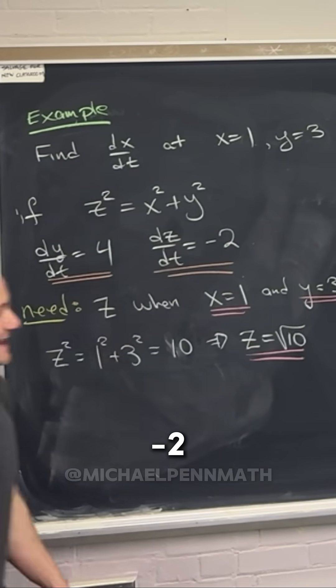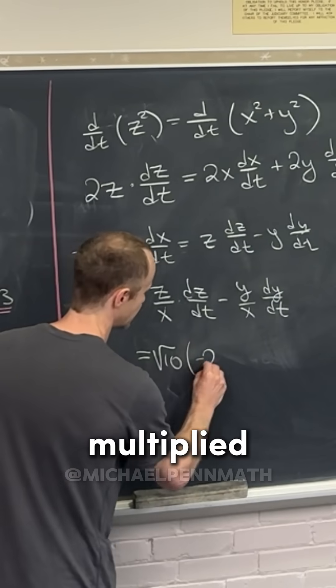And then dz/dt, well that was negative 2, so that's going to be multiplied by negative 2.